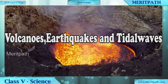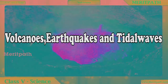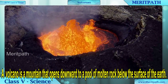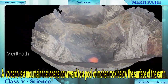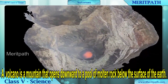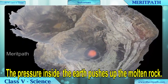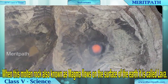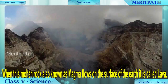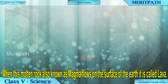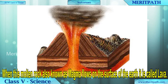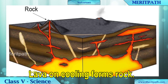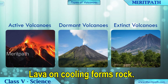Volcanoes, earthquakes, and tidal waves. A volcano is a mountain that opens downward to a pool of molten rock below the surface of the Earth. The pressure inside the Earth pushes up the molten rock. When this molten rock, also known as magma, flows on the surface of the Earth, it is called lava. Lava on cooling forms rock.